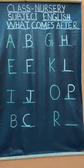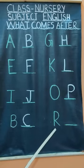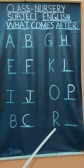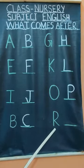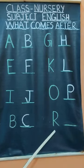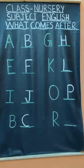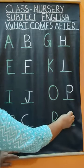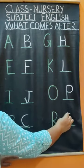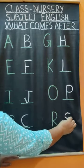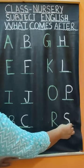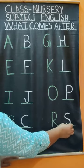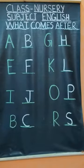Now the last one, what is this? R for Rabbit. And what comes after R? Yes, very good — S for Ship comes after R. So you will write S for Ship on the blank space.